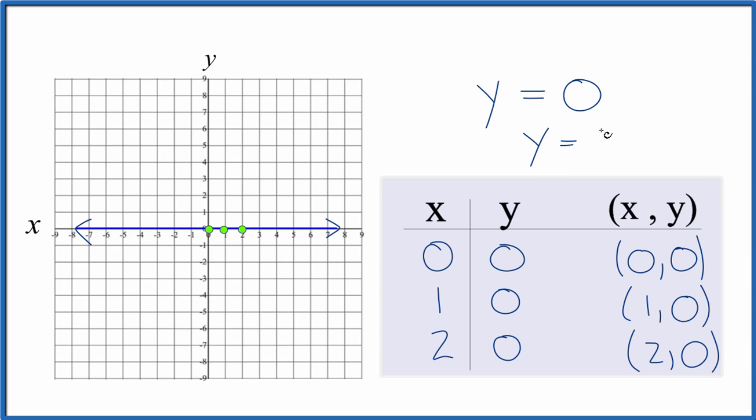Like y equals 7. That just gives you a horizontal line here across 7. If you had negative 7, it would just be a horizontal line down here.